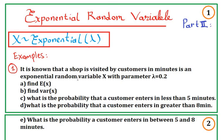If we know that a shop is visited by customers in minutes, modeled as an exponential random variable X with parameter lambda equals 0.2, then find: the expectation of X, the variance of X, the probability that a customer enters in less than 5 minutes, greater than 8 minutes, and between 5 and 8 minutes.